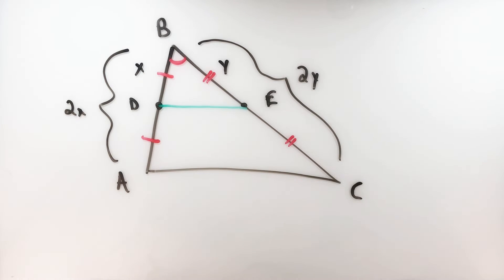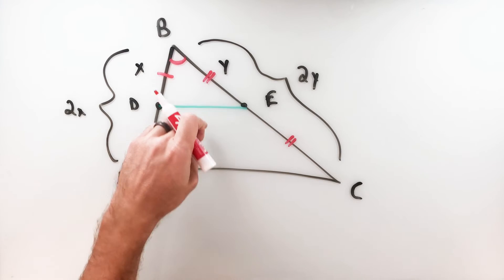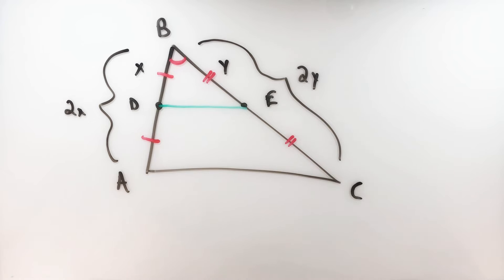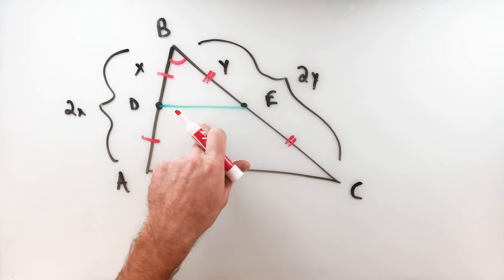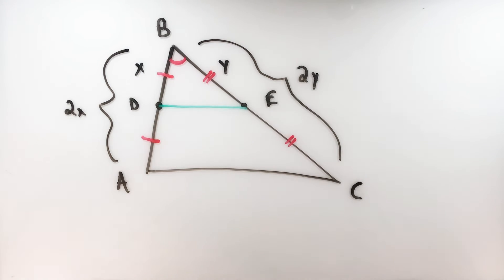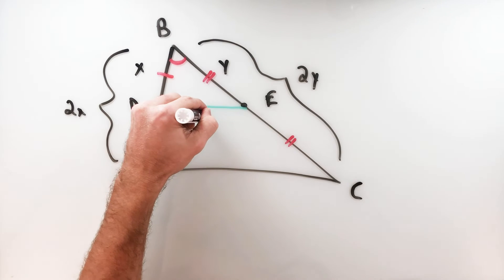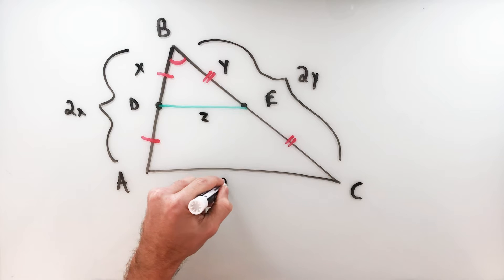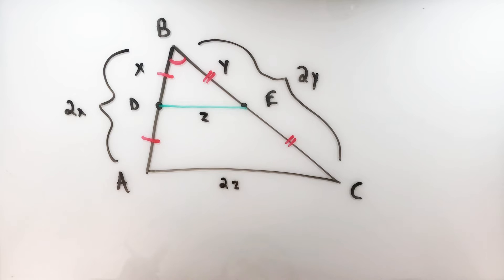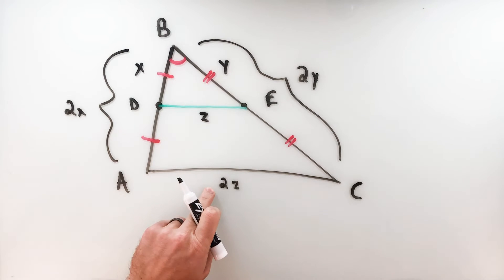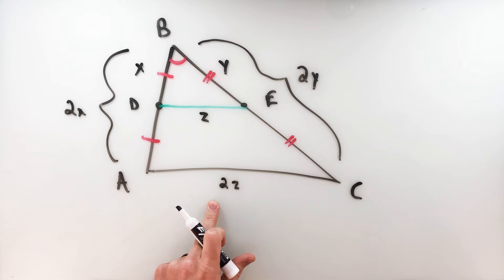Even though I don't have anything written for the third side, once I know the two triangles are similar, all their sides are proportional. So segment DE — the mid-segment — if AC = 2z, then DE = z. It's double, just like the other two sides. So the mid-segment is half the length of the third side of the triangle.